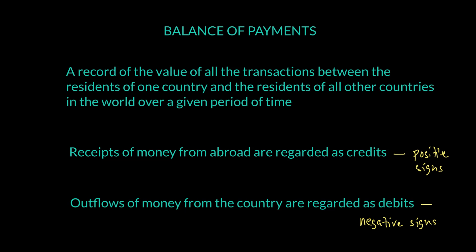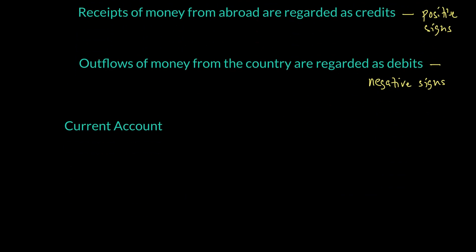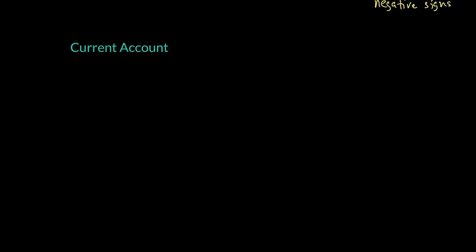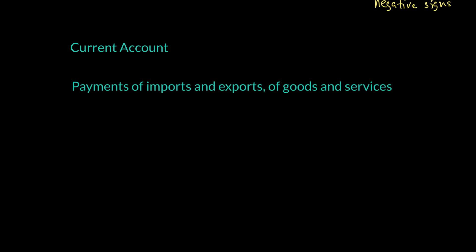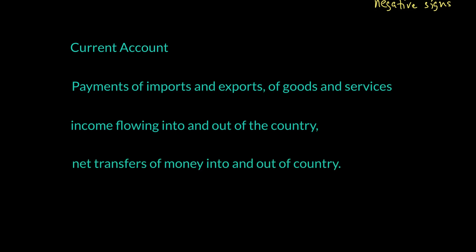Balance of payment has three sections. The first is what we call the current account. The current account looks at all the payments of goods and services that a country pays and receives — so imports and exports of goods and services. It also includes income received and paid by the country, and net transfers of money into and out of the country.